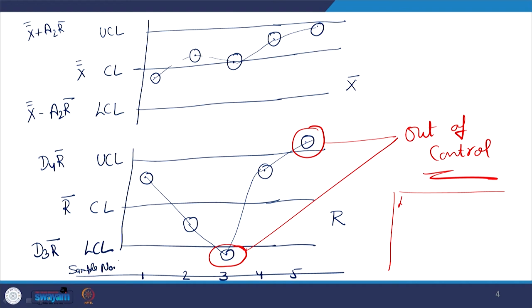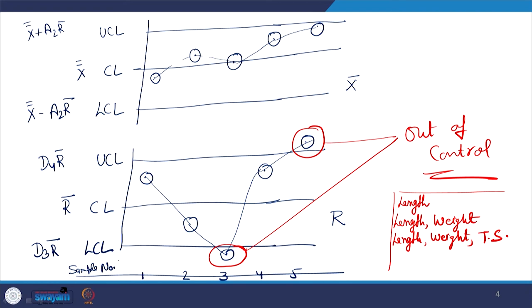We use X-bar R charts together to make better decisions with respect to quality control in processes. Another important point: we need to make as many X-bar R charts as there are variables we want to control. If you want to control only the length of your final product, you require one set of X-bar R charts. If you also want to control weight, you need two sets. If you want to control length, weight, and tensile strength, you require three sets of X-bar R charts.